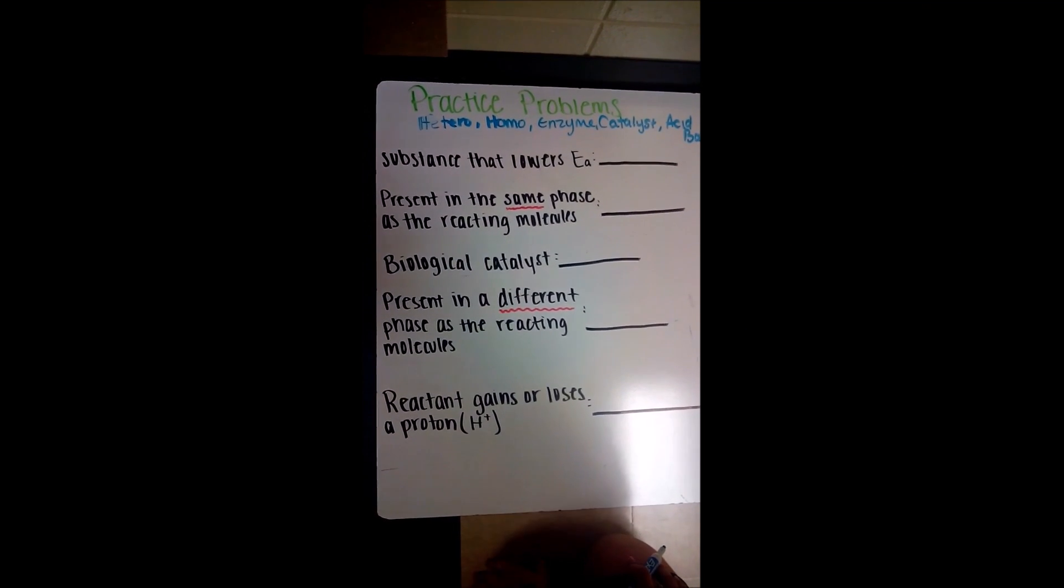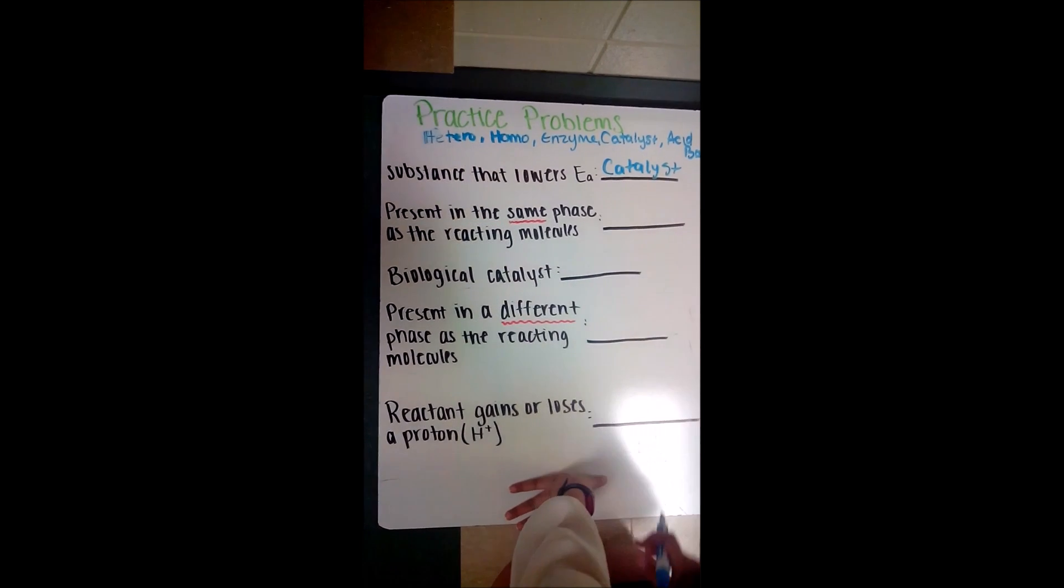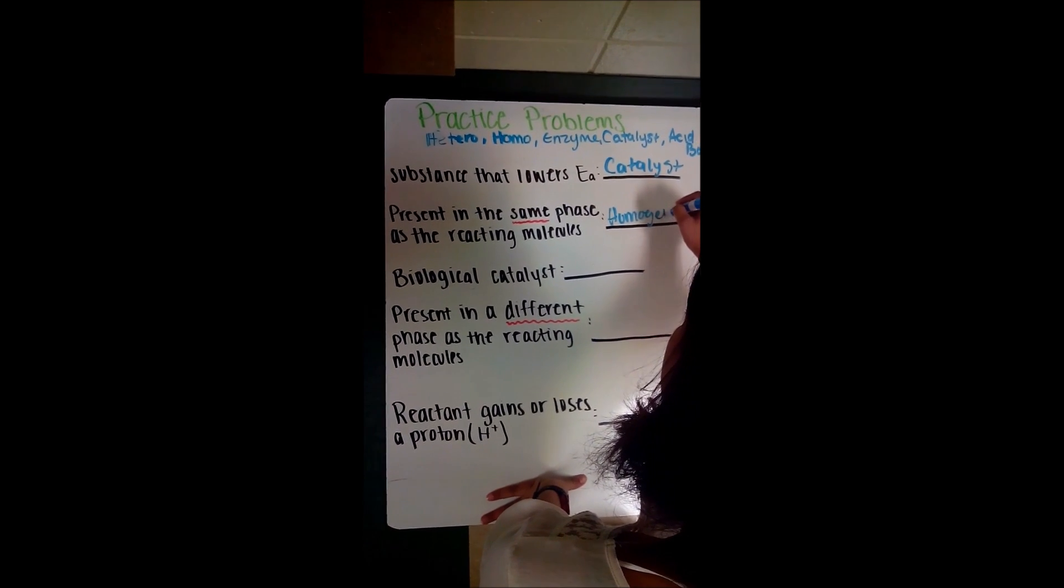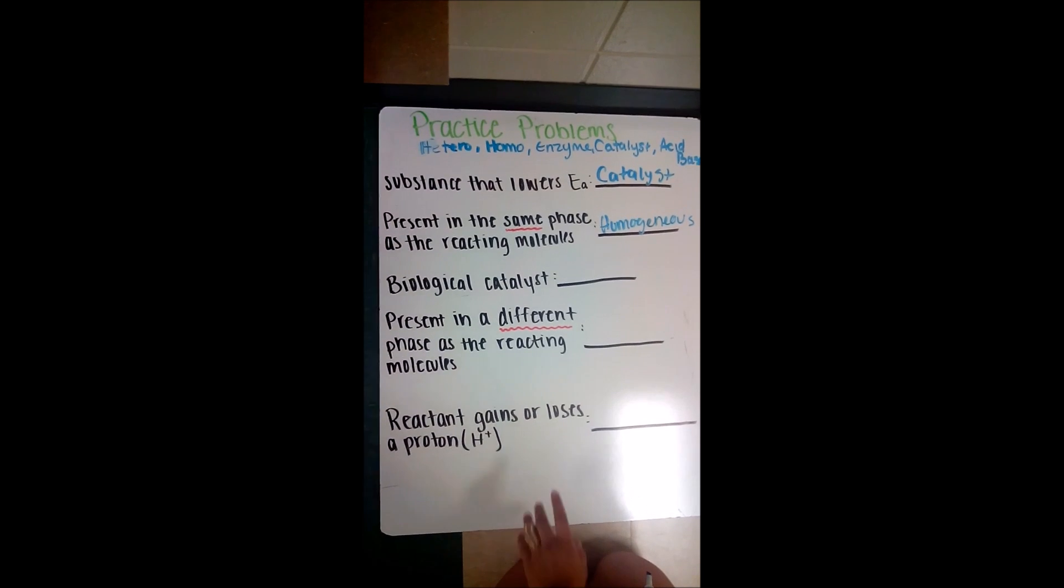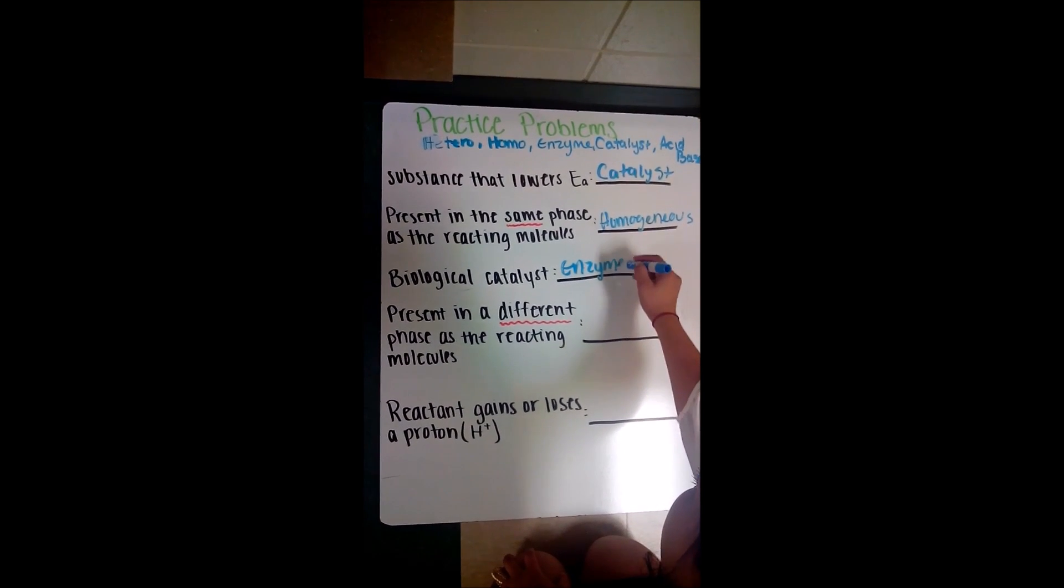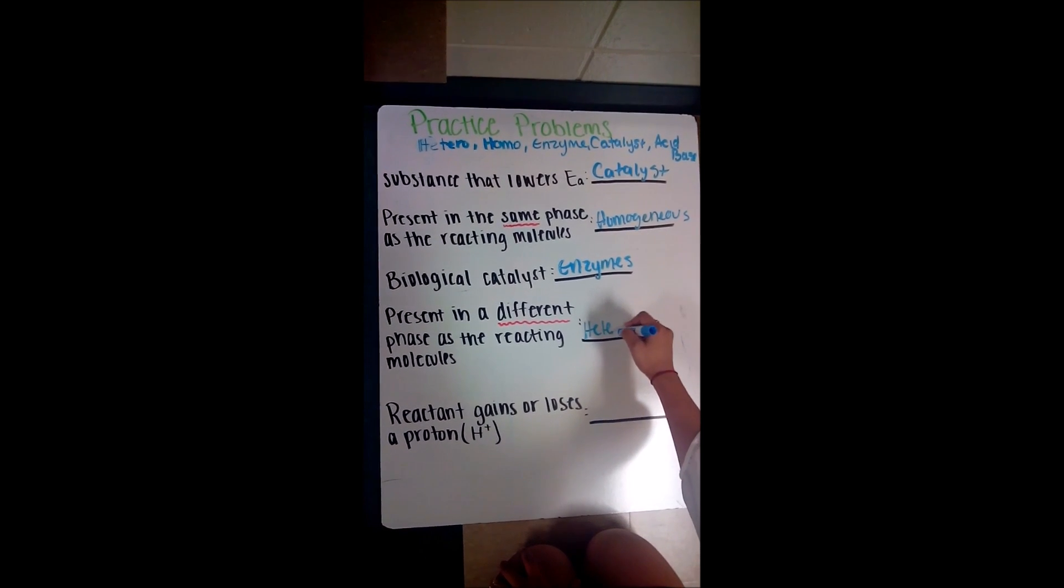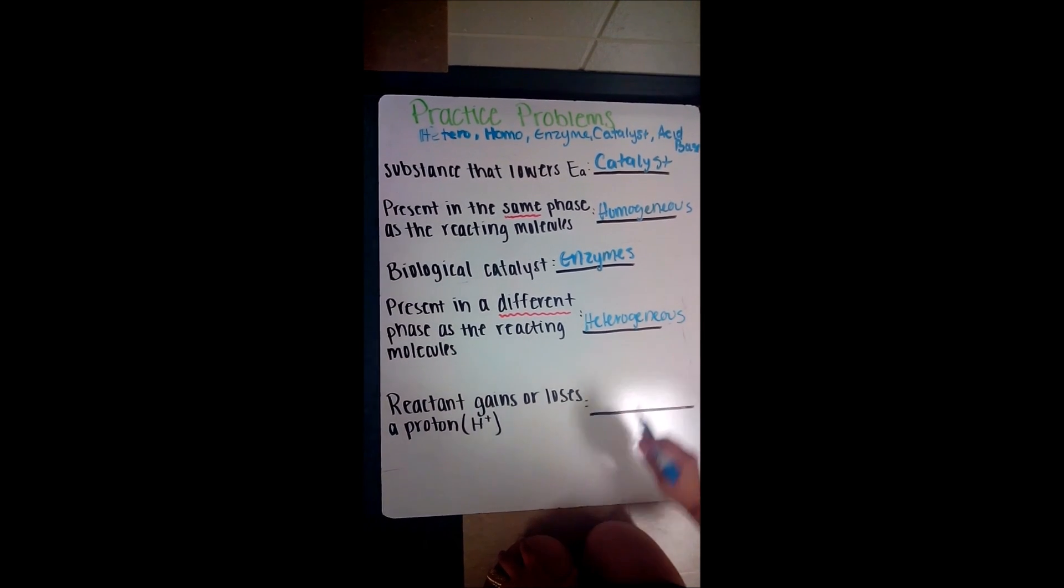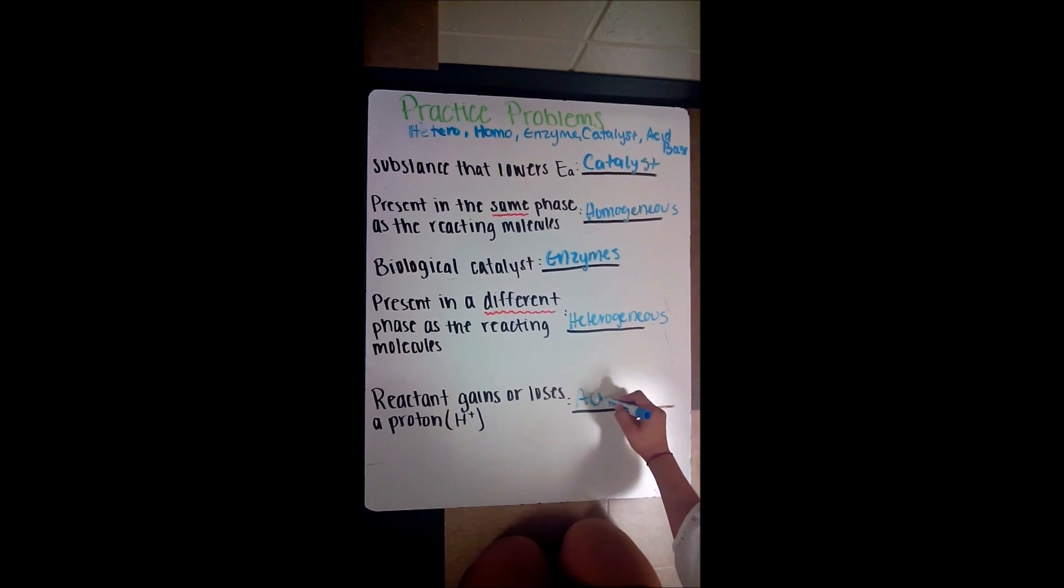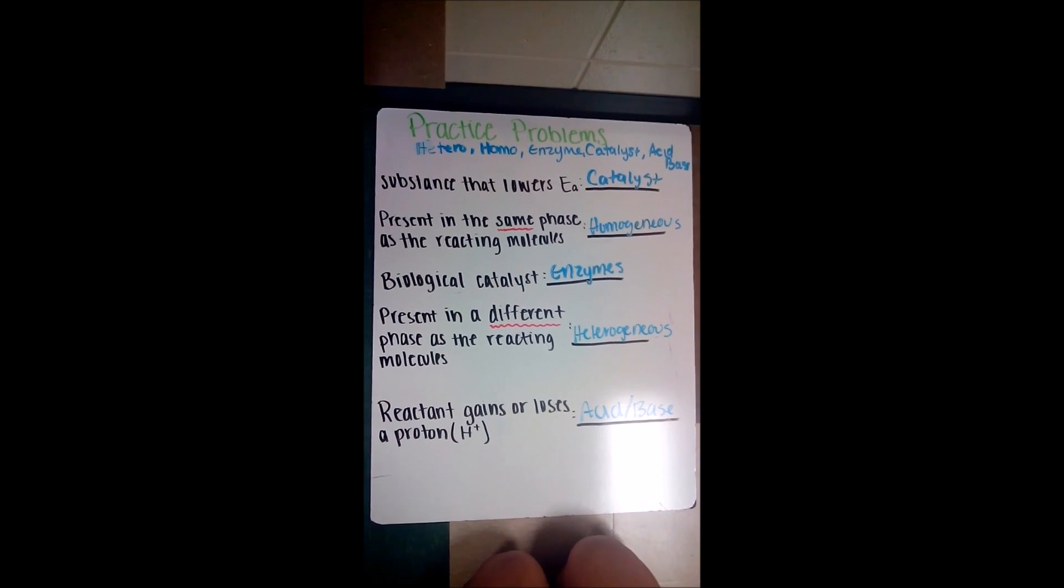So here for the first one, substances that lower activation energy are a catalyst. A homogeneous catalyst are present in the same phase as the reactant molecules. Enzymes are a biological catalyst. A heterogeneous catalyst are present in different phases as the reactant molecules. An acid-base catalyst gain or lose protons.